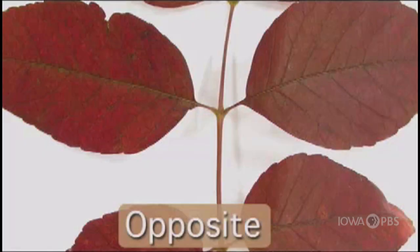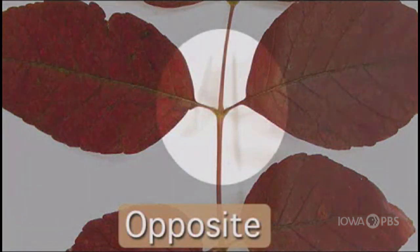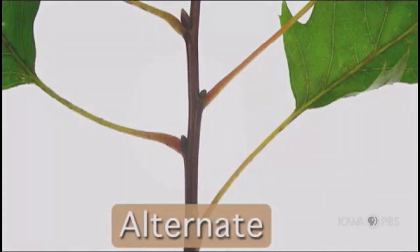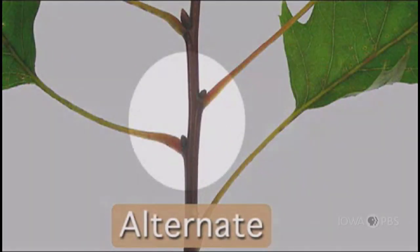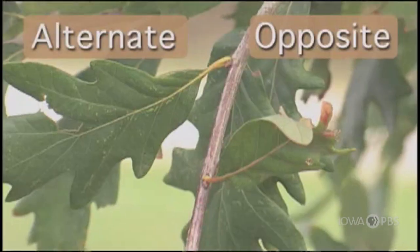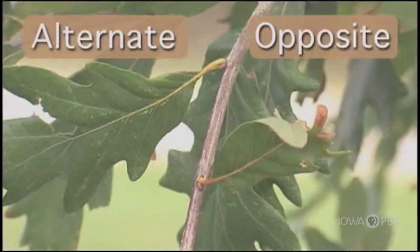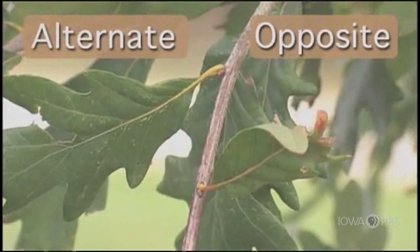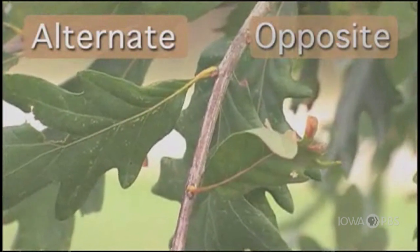The next question in the key is: does this tree have opposite or alternate leaves on the branch? Opposite leaves grow directly across each other in pairs. Alternate leaves grow singly along the branch with space between each leaf. So does our tree have leaves that grow alternate or opposite along the branch? They are alternate.